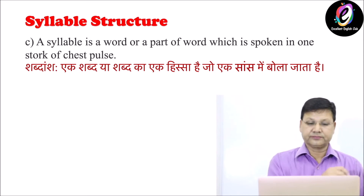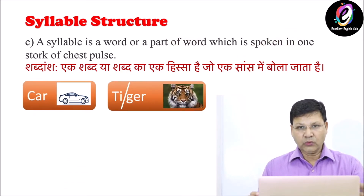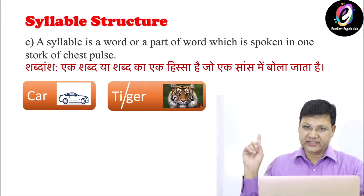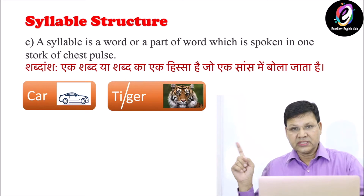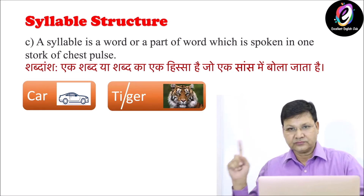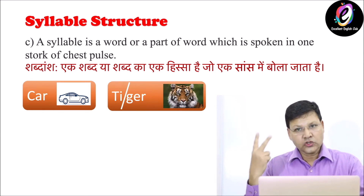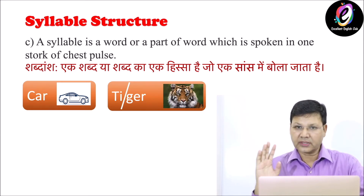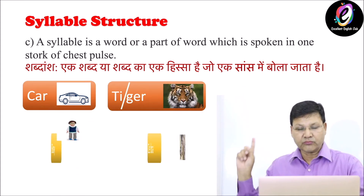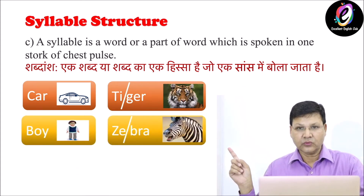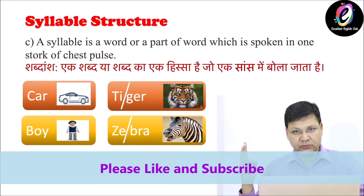Look at the examples. Number one: 'car' — one syllable word. Number two: 'tiger' — two syllables word. Another example: 'boy' — one syllable word. 'Zebra' — two syllables word.